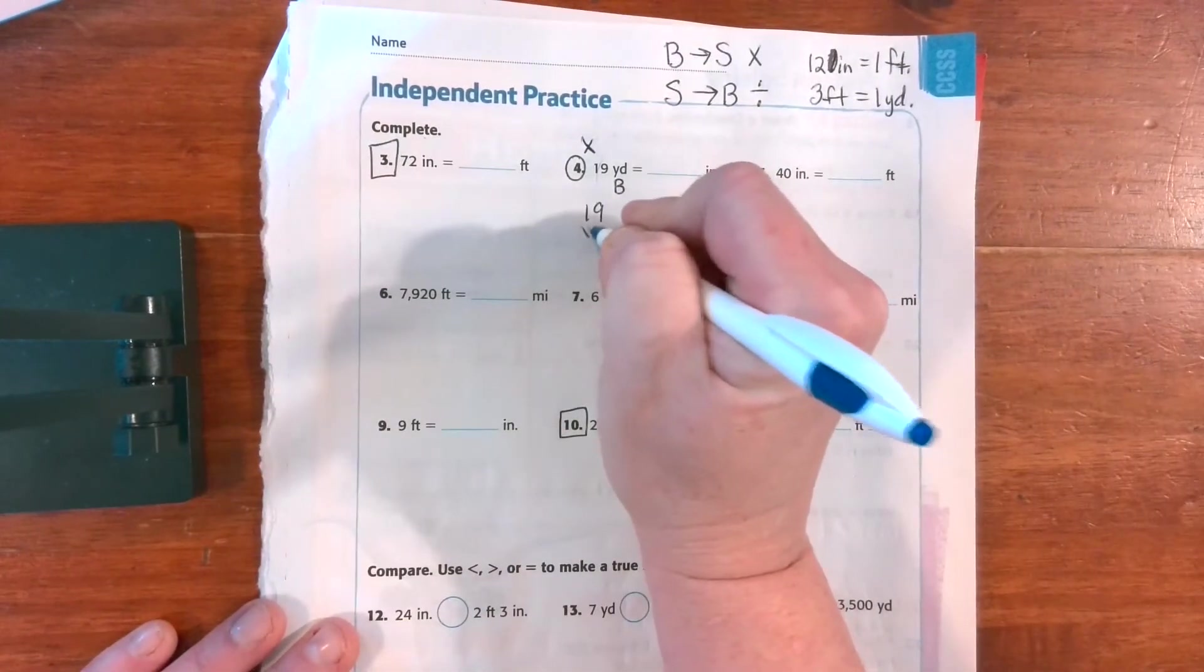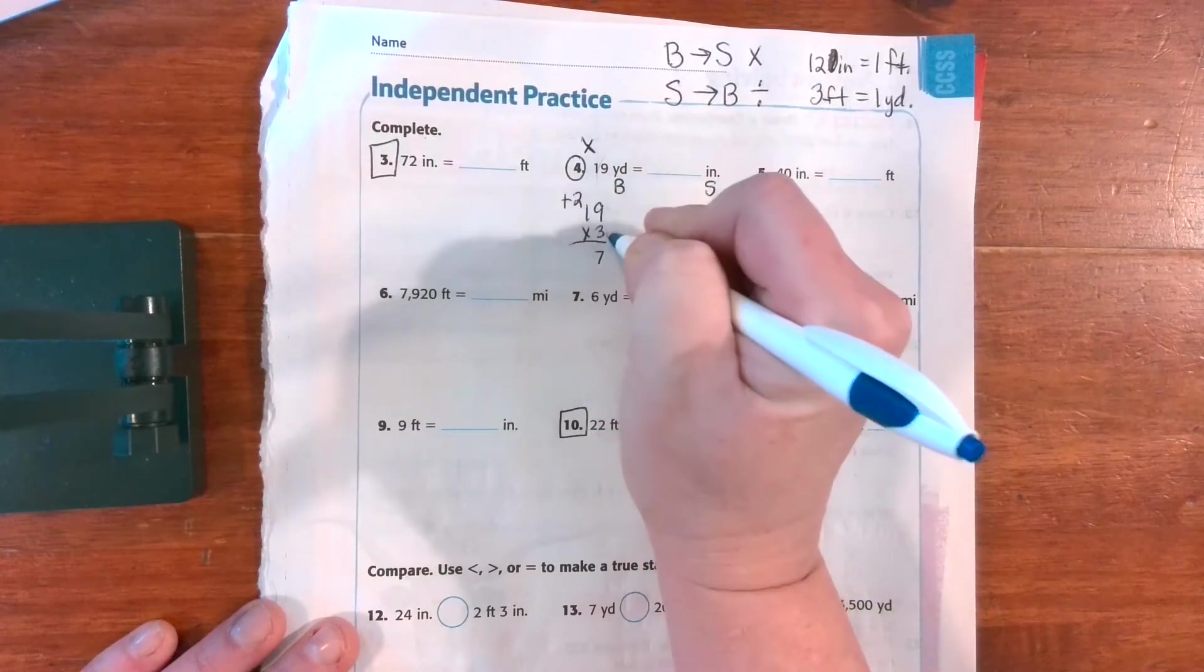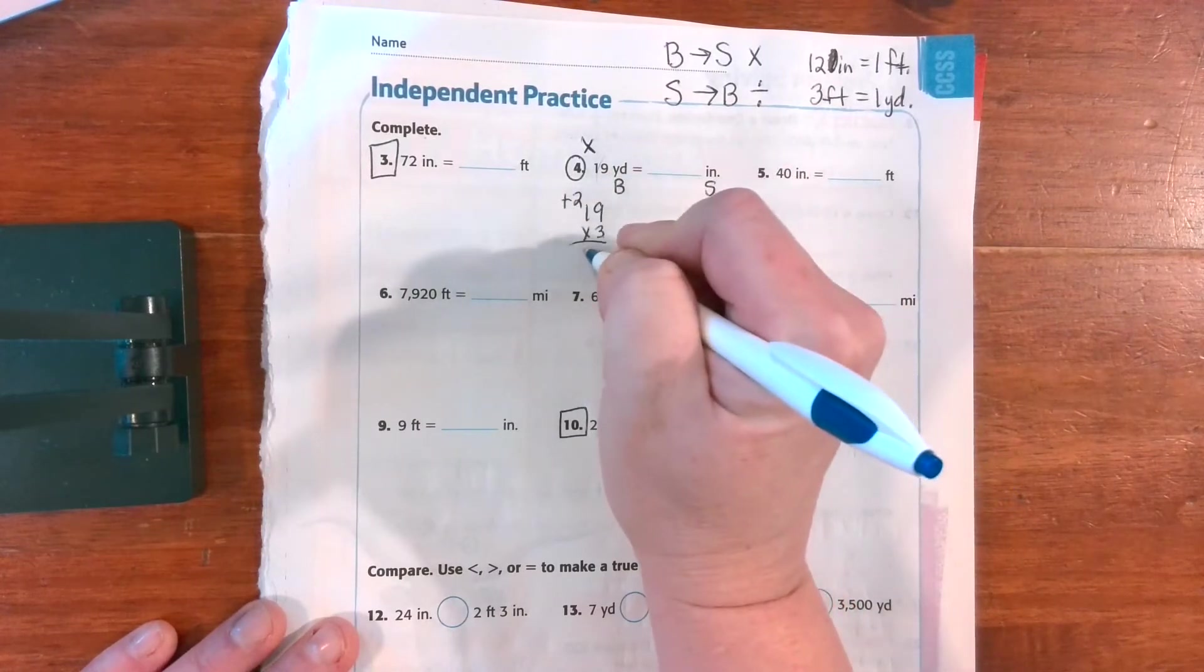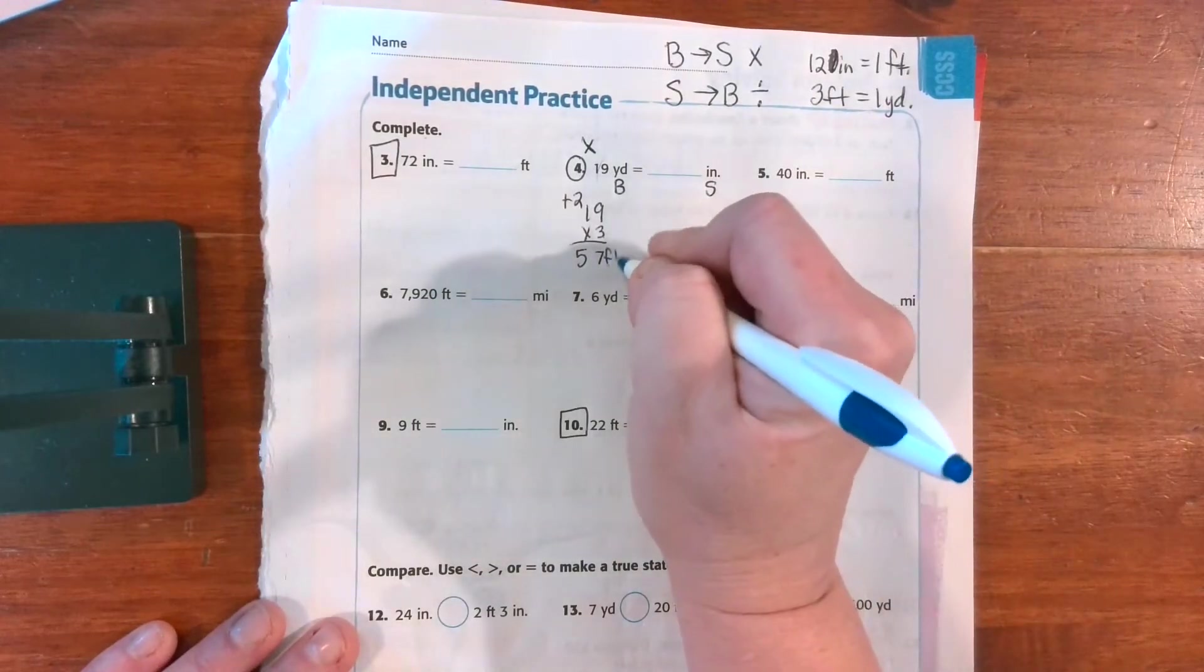We're going to do three groups of 19. 3 times 1 is 3, plus 2 is 5. So I have 57 feet.